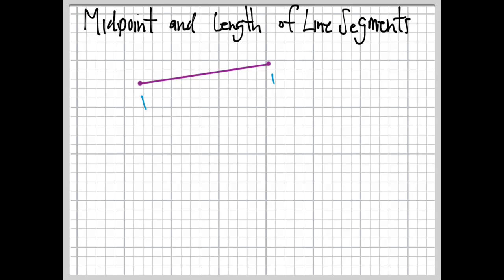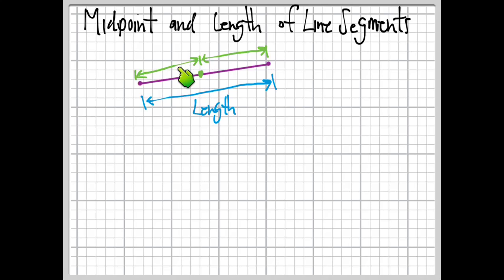Now we're going to talk about finding the length of the line segment, which is just how long it is, and the midpoint of the line segment, which is also pretty easy. It's the center — that point in the middle of the line that divides the line into two exactly equal line segments.